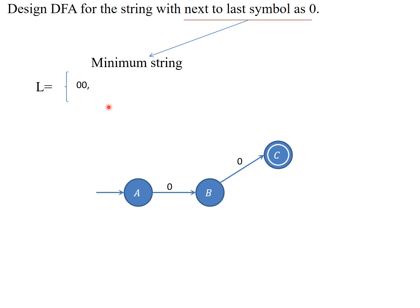I have to look at other possible valid strings where the next-to-last symbol is also zero. Starting from the initial state with the minimal DFA constructed: zero is accepted, we have a transition from A to B. On B there is no transition on one, so we have to create one more transition. Zero and one will go to D. In order to make this a valid string, D should be the accepting state. So two strings have been accepted.